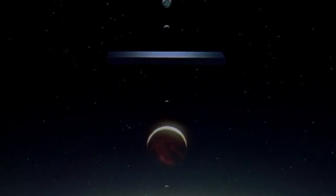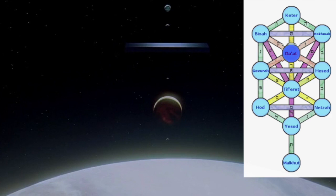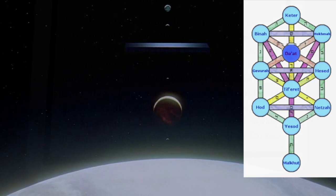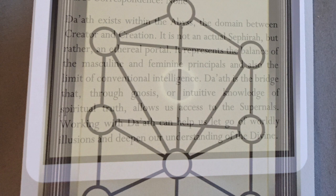The planetary alignment occurring at Jupiter just before entering beyond the infinite stargate is the primary key to unlocking the actual significance of the Black Monolith. By placing this planetary alignment side by side with the Tree, we can see that the monolith lands in the place of Daath, as well as the abyss where Daath resides. Daath exists within the abyss — the domain between creator and creation. It is not an actual sephirah, but rather an ethereal portal. It represents the balance of the masculine and feminine principles, and also the limit of conventional intelligence, like HAL 9000. Daath is the bridge that, through gnosis or intuitive knowledge of spiritual truth, allows us access to the supernals.